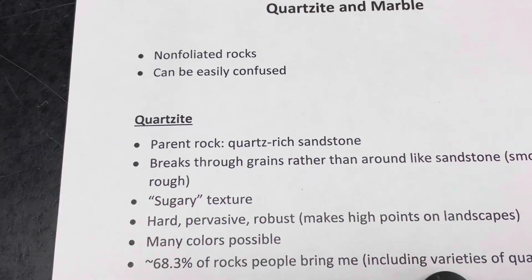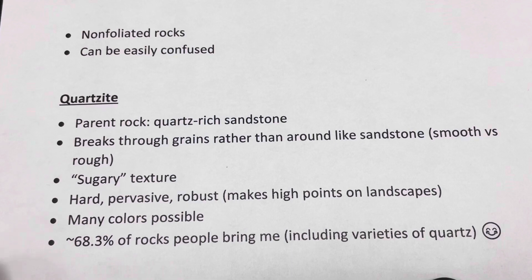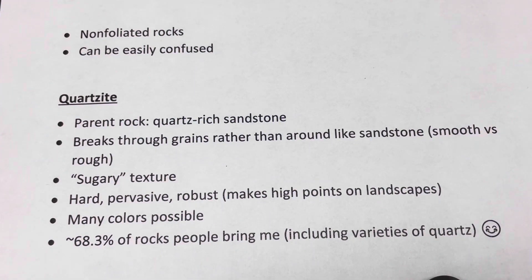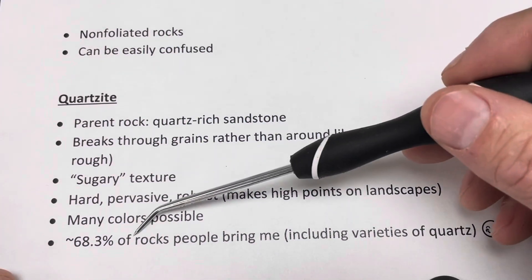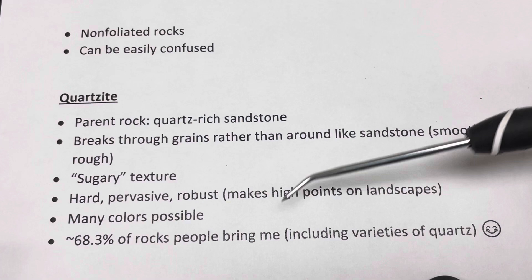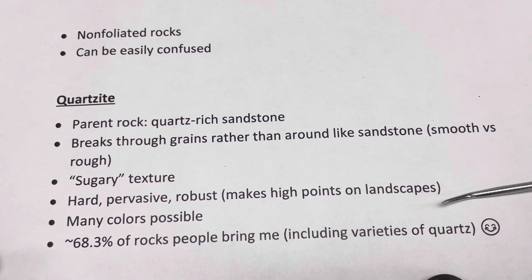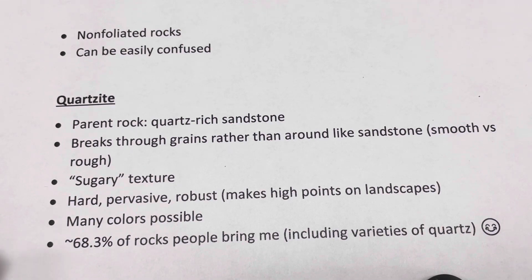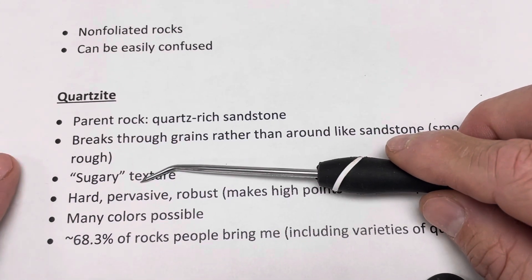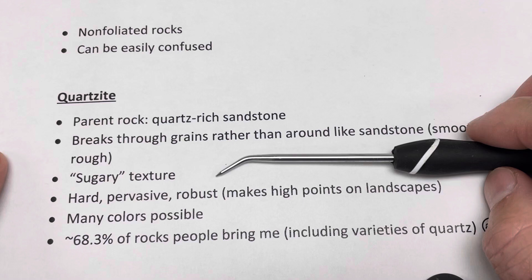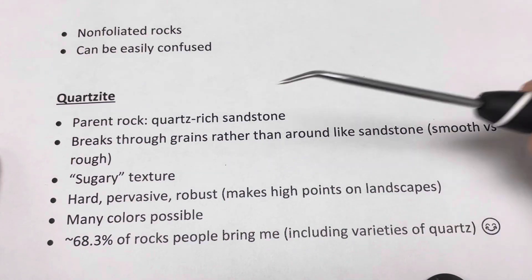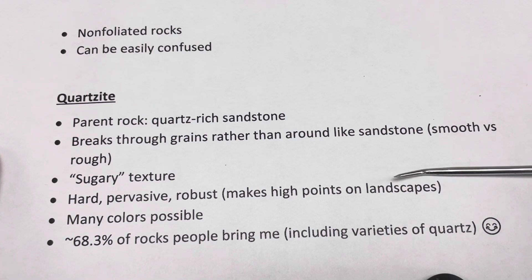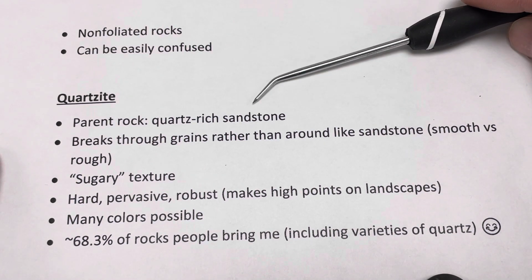Quartzite is probably one of the most common rock types out there. A lot of times when people — especially kids — are outside, they tend to pick up a lot of quartzite, and there's a reason for it. Quartzite is incredibly tough, hard, made out of quartz, pervasive, and incredibly strong and difficult to break down both chemically and physically. It tends to form high points on the landscape — a lot of ridges and mountains are capped by quartzite in many locations.